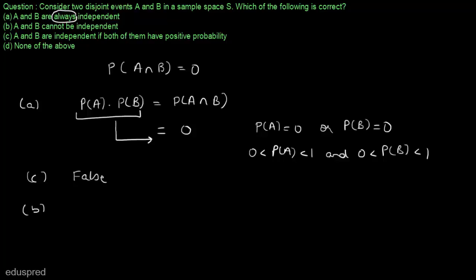Now let's have a look at part B. In part B, it is mentioned that A and B cannot be independent. That's not true because A and B can be independent if either probability of A is equal to 0 or probability of B is equal to 0. So even part B is false.